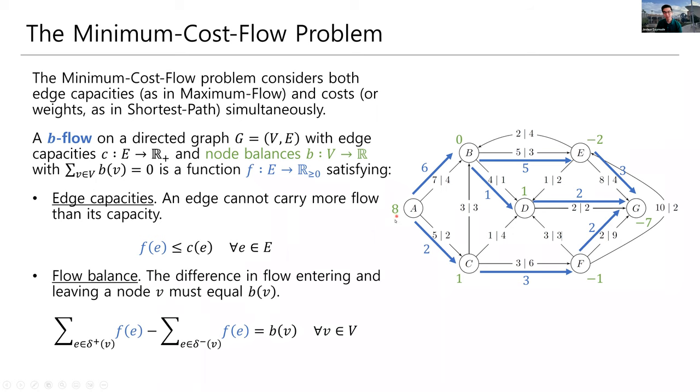So for example, A is a node that is supposed to generate eight flow. And indeed, we see six flow being sent out the top edge and two flow being sent out the bottom edge, which is in total eight.